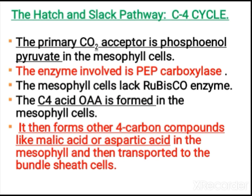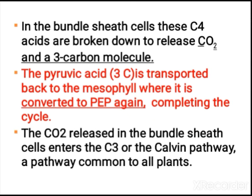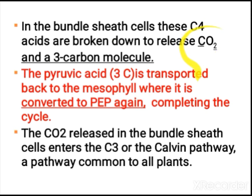To summarize the C4 pathway: the primary CO2 acceptor is phosphoenol pyruvate, the enzyme involved is PEP carboxylase, and the first product is oxaloacetic acid (OAA), later converted to malic acid and aspartic acid. The C4 acid then travels to bundle sheath cells, releases carbon dioxide, and the C3 acid is transported back to mesophyll cells to regenerate PEP again.